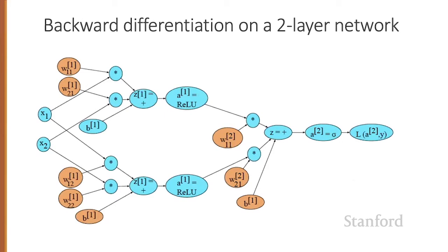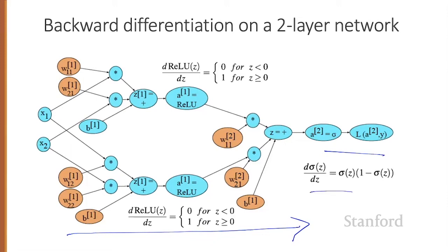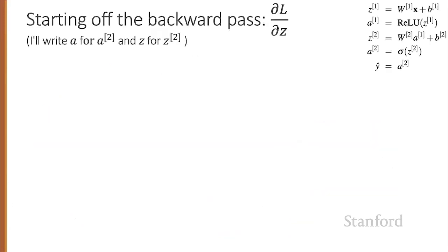For a particular observation X1, X2, we would run the forward pass, assign variables to all of our nodes, and then starting with the last nodes, run the backward pass. For the backward pass, we'll need to know the derivative of all the relevant functions. Let's show how to start off the backward pass by computing the first couple of steps to find the derivative of the loss function with respect to Z2, the last Z. I'll write A for A-super-two and Z for Z-super-two.